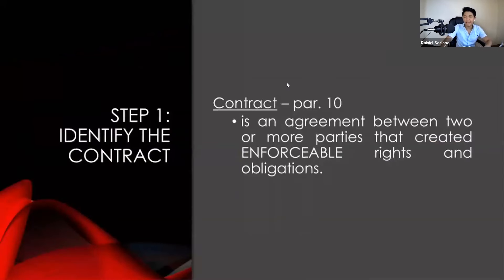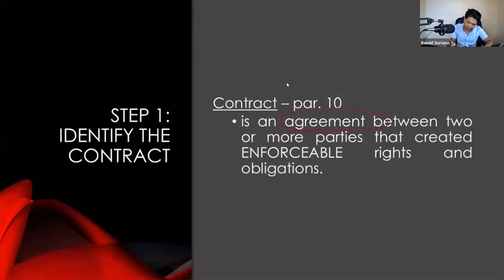Let's start with step number one: identify the contract. According to paragraph number 10 of IFRS number 15, a contract is an agreement between two or more parties that creates enforceable rights and obligations. Enforceability is actually a matter of law, so IFRS number 15 did not discuss enforceability further. To know more about enforceable contracts, you should study obligations and contracts, which is part of RFPT.